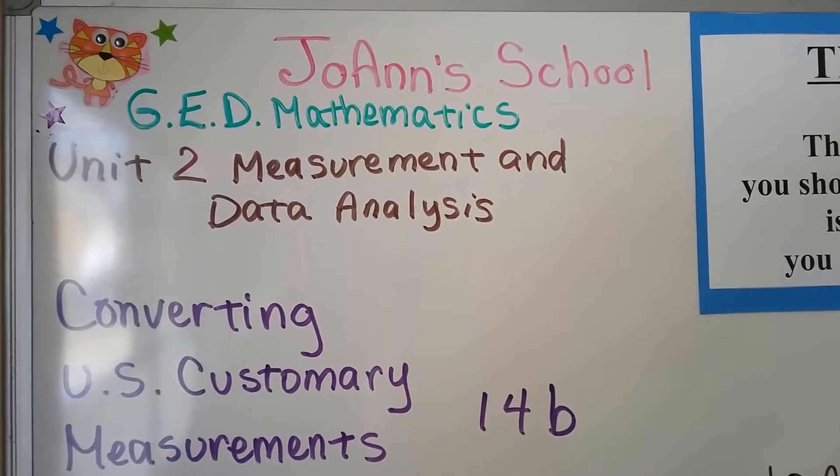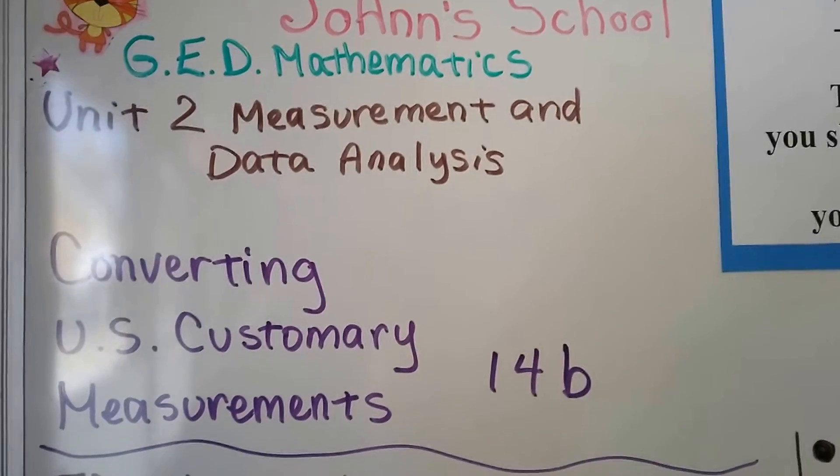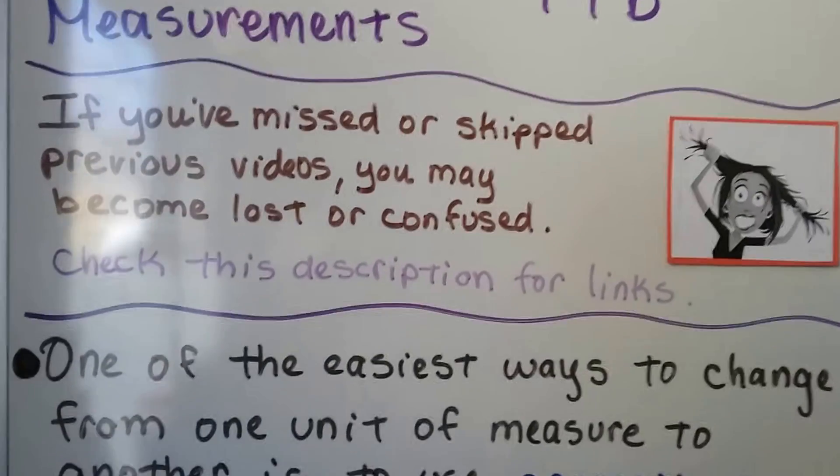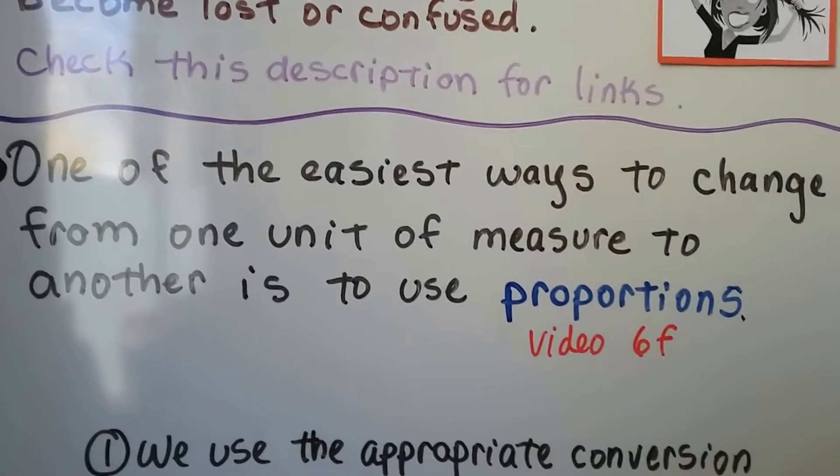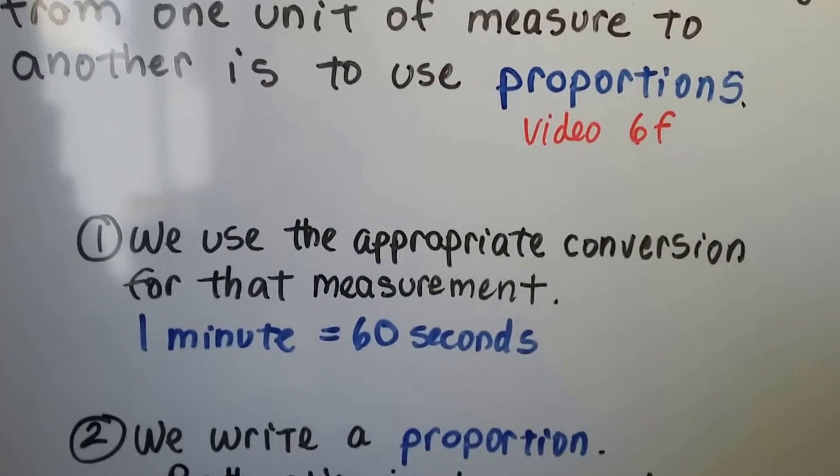We're going to be converting U.S. customary measurements to each other. This is lesson 14b. If you missed 14a, there's a link in the description. One of the easiest ways to change from one unit of measure to another is to use proportions. We learned about that in video 6f, and there's a link for that one too.